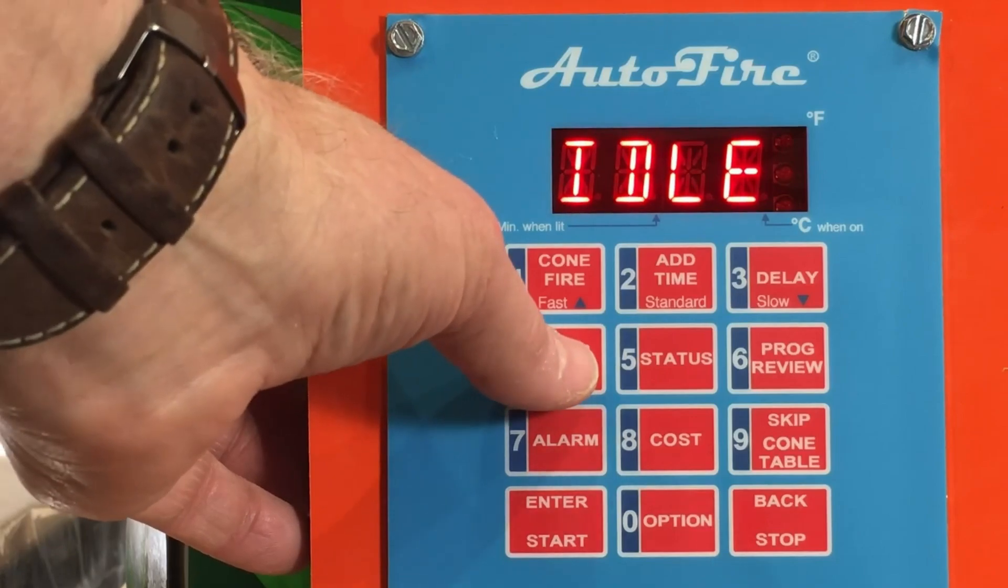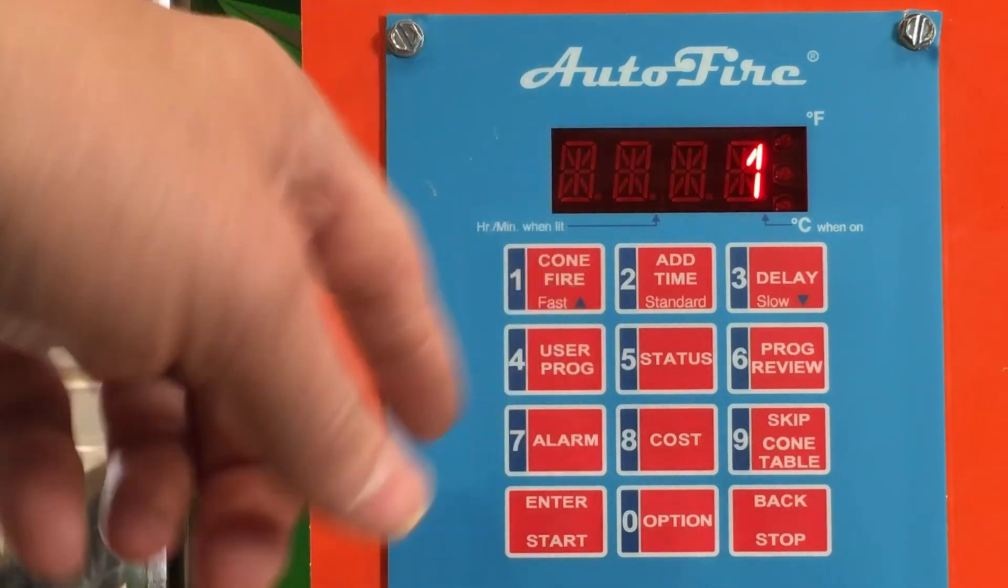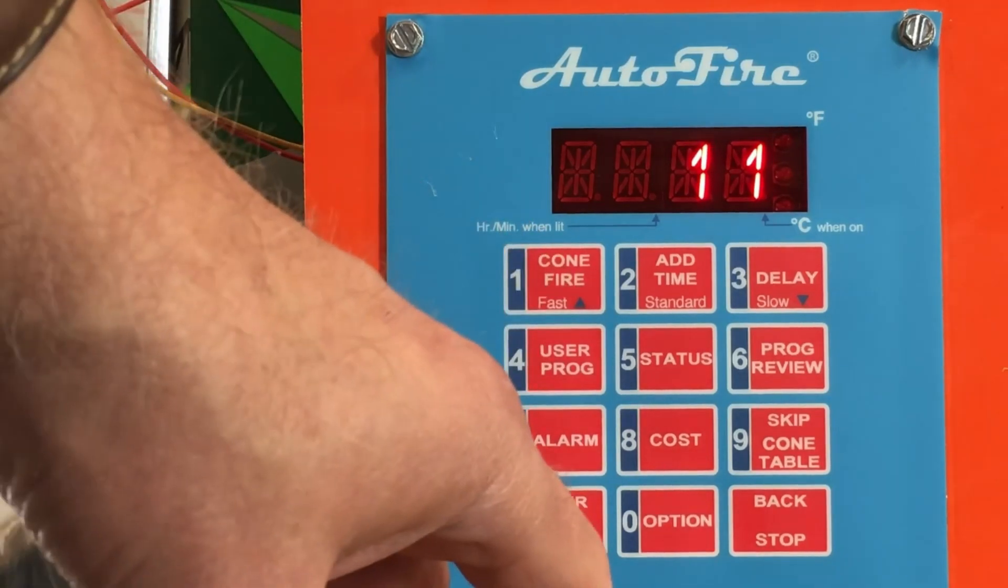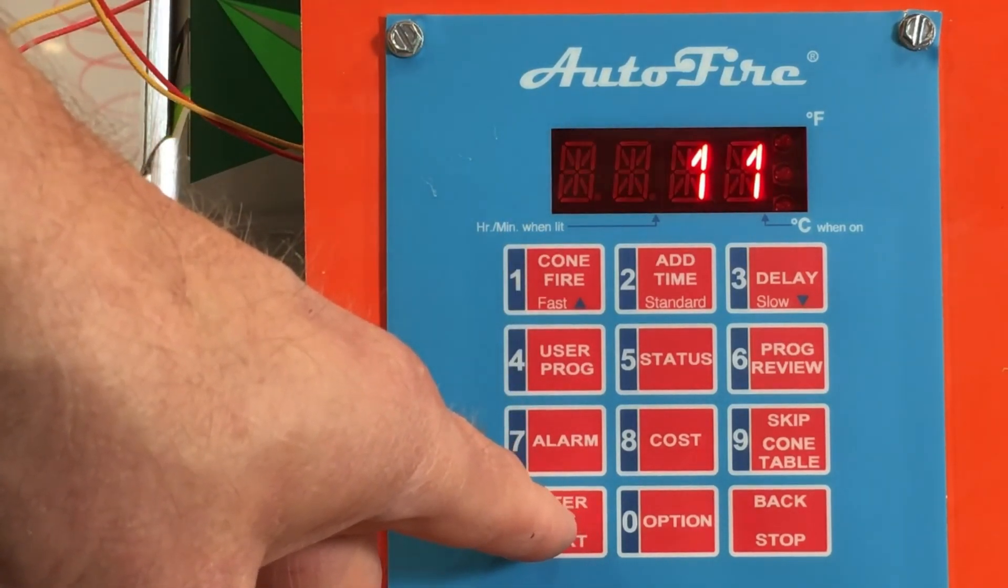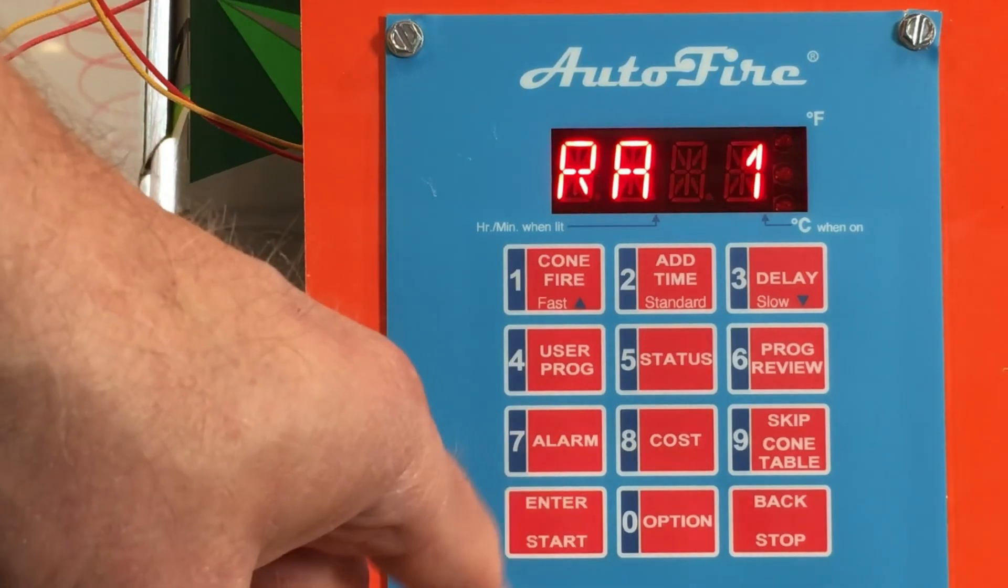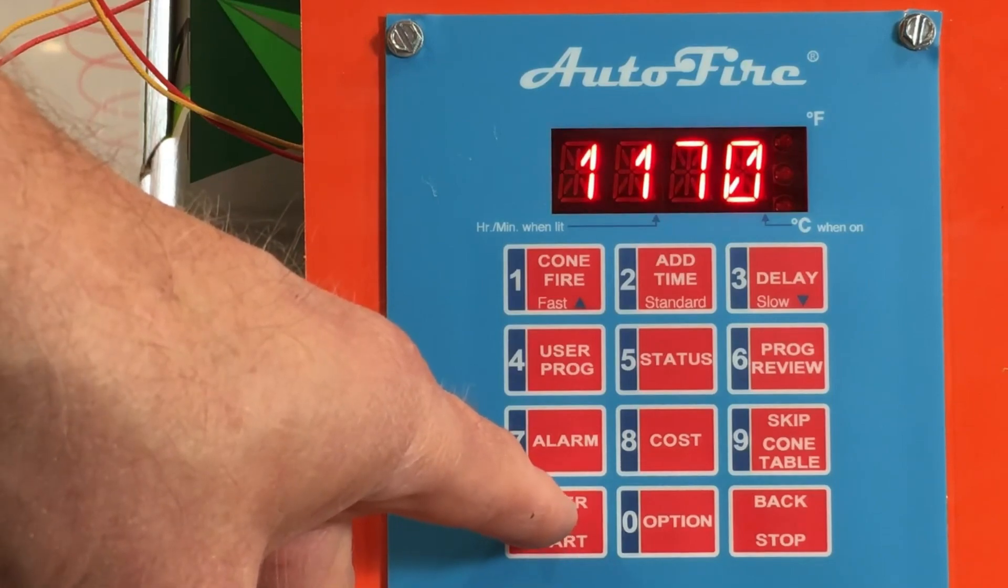On this controller, in the glass mode, the user program button, by pressing it, you can see program one. If we went to 11, which is the first one that's pre-programmed for a full fuse less than 10 by 10 in a brick kiln, you can see that we have a rate of 400 degrees an hour and we're going up to 1170 for a bubble squeeze. We're going to do a 40 minute hold.